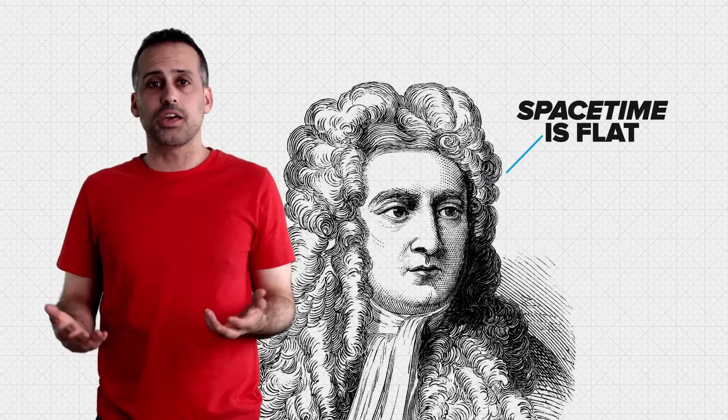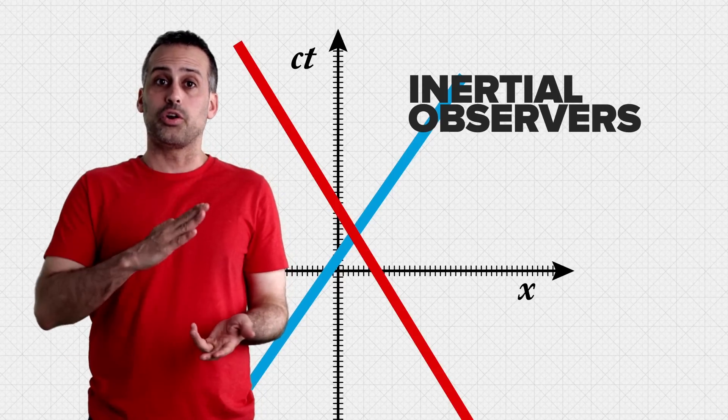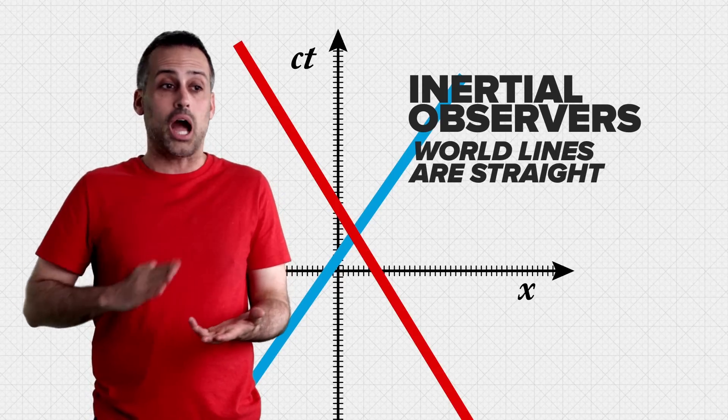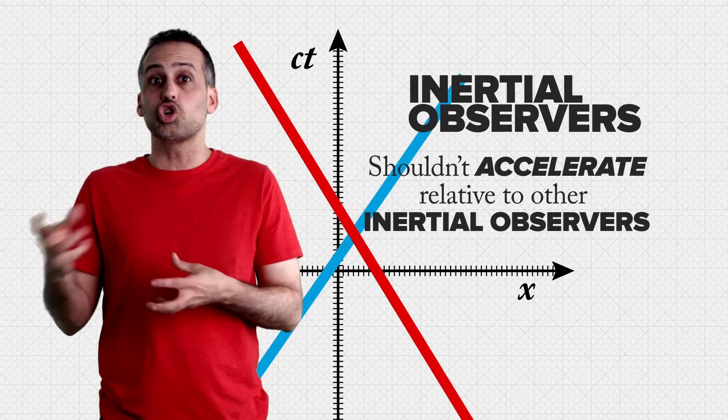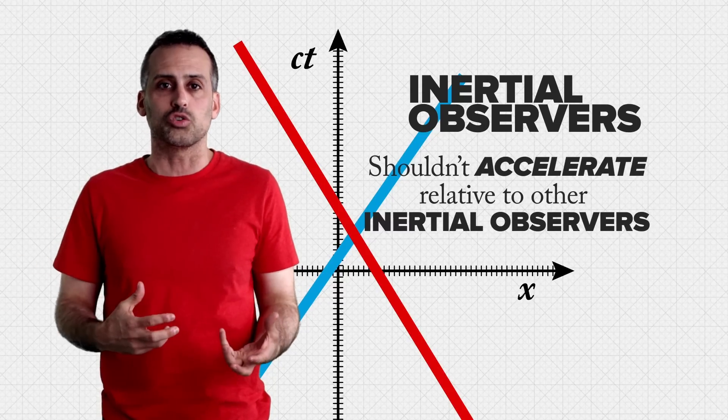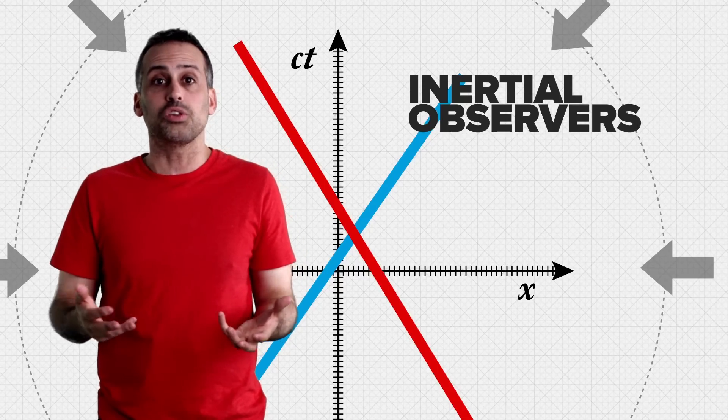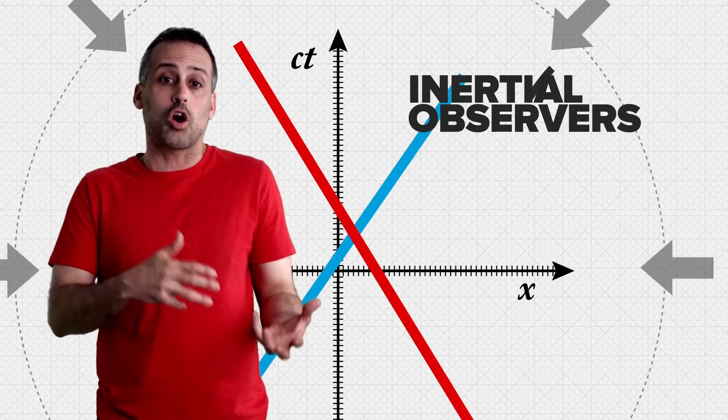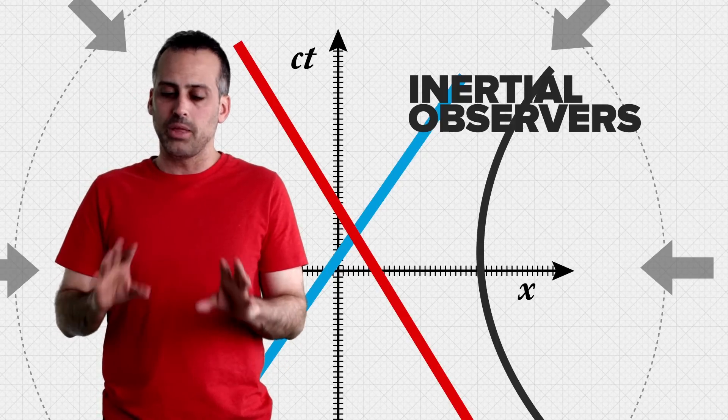Let's start with Newton. He says that spacetime is flat. Just think about it. On the flat spacetime diagrams of inertial observers, the world lines of other inertial observers are straight, indicating constant spatial velocity. This captures Newton's idea that inertial observers shouldn't accelerate relative to other inertial observers. Newtonian gravity would just be an additional force we introduce, like any other force, that would cause some world lines to become curved, i.e. spatially accelerated. This is a bit oversimplified, but for today, it'll do.